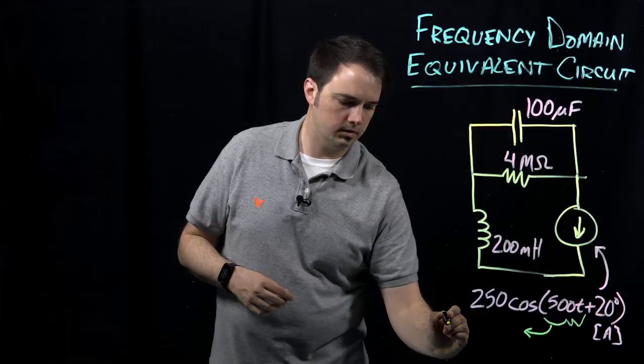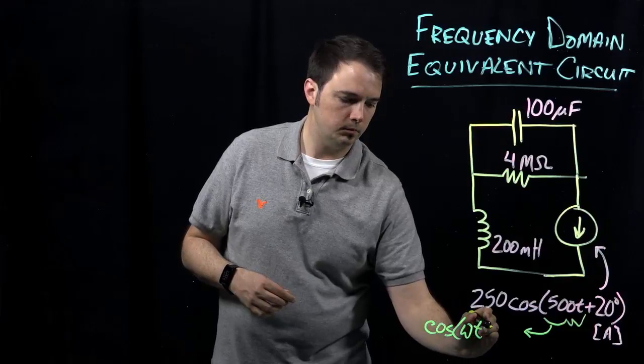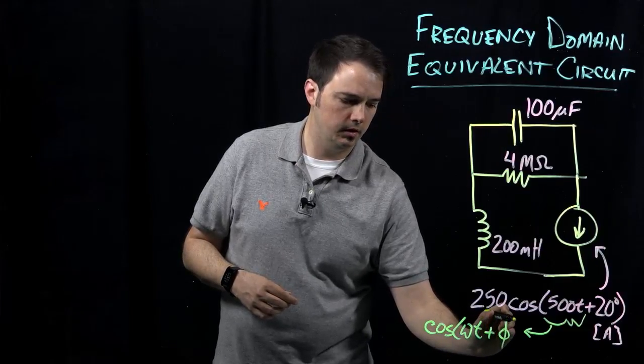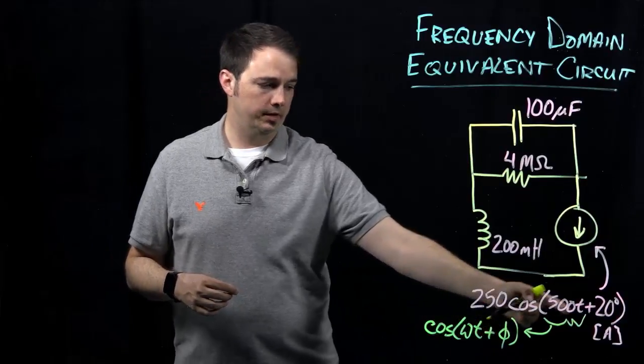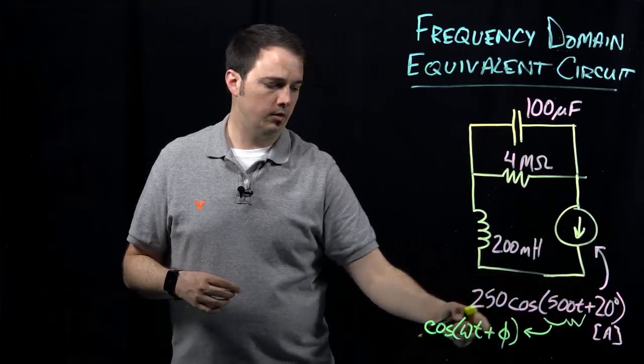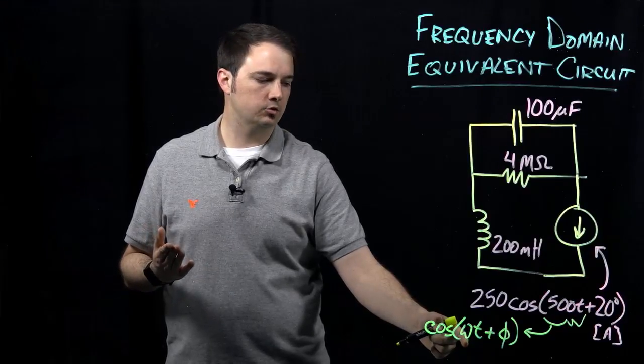And we again know that if we are comparing this to the general form for the notation, we know that this 500t is telling us something about what the frequency is, because this is telling us, well, in thinking about the general form, we have cosine omega t plus phi, where phi in this case is indicating the phase. That's where our 20 degrees is coming from. T, of course, is time, and then omega here is the frequency of that source.